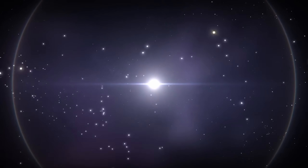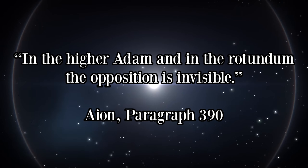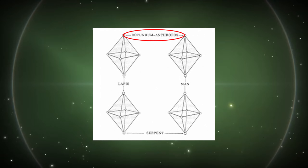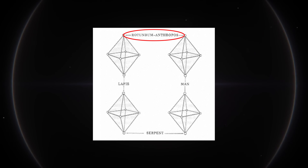Jung makes this inference because the difference between the higher atom and the rotundum is invisible. This is because the higher atom and the rotundum contain all the necessary components of ego development. The rotundum contains everything that God derives the universe from, and the higher atom is a perfect unity of all those elements. The only thing that distinguishes the two of them is that one is an ordered unity and one is a unity in chaos. Unfortunately, the mortal man is frequently unable to tell which is the dark unity and which is the light.